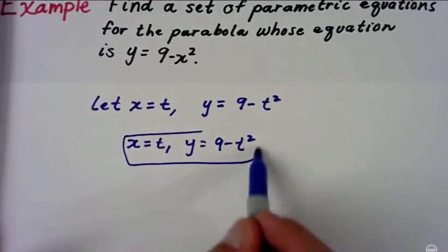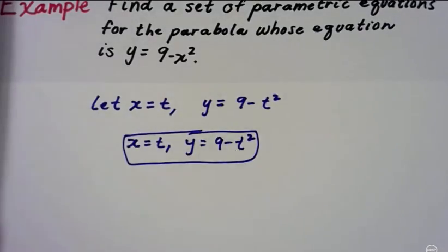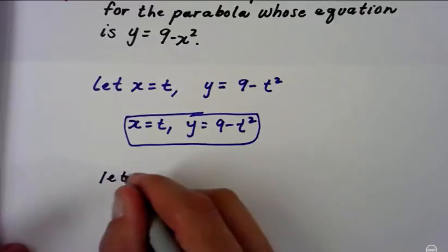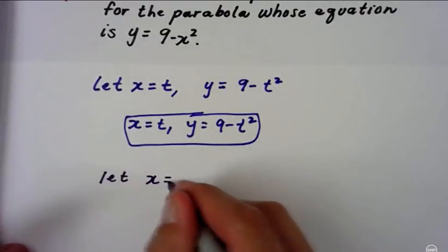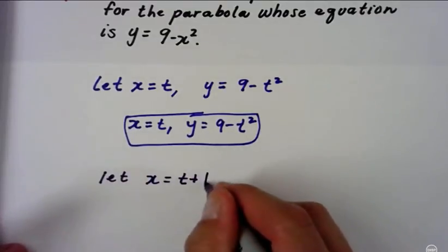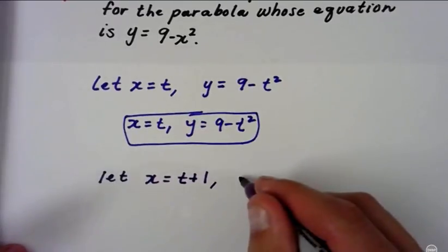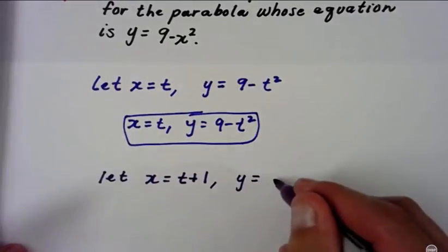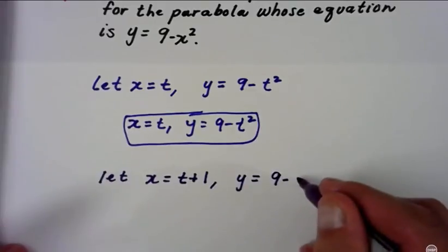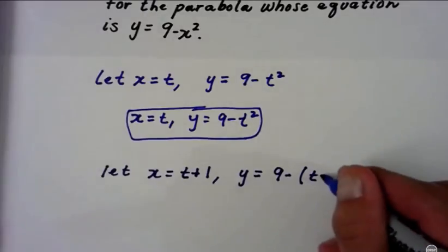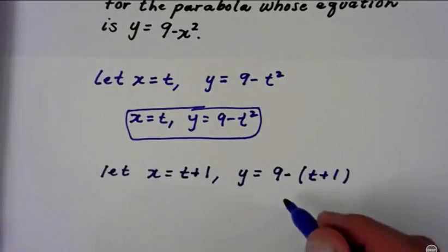But that doesn't mean that's the only way you can do this. For example, what happens if we let x equal t plus 1? What does that do to our 9 minus x squared? We would have y equals 9 minus—now we know what x is, x is t plus 1, so we'll substitute t plus 1 here and simplify.